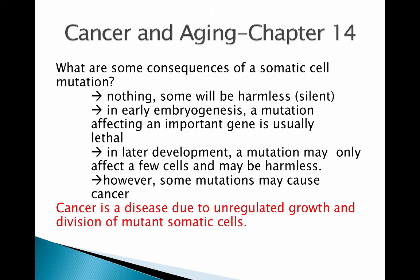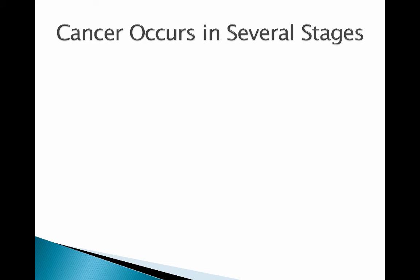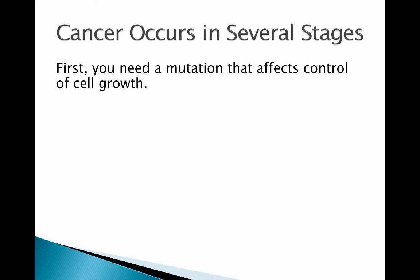Cancer is a disease due to unregulated growth and division of mutant somatic cells. Cancer occurs in several stages: first, you need a mutation that affects the control of cell growth.